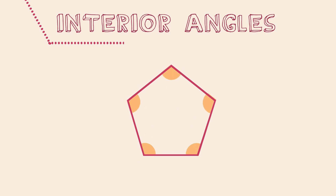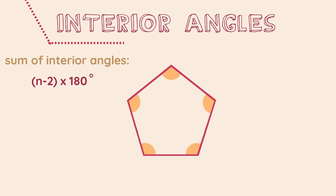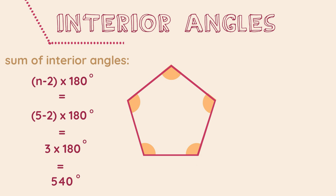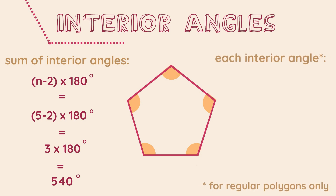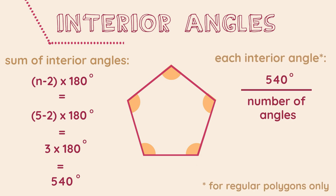Have a look at this example. Using this knowledge, we can also calculate each individual interior angle, as long as the shape is a regular polygon where all angles are equal. We do this by dividing the sum of interior angles by the number of angles or sides of that shape. For example, as this is a five-sided shape, we can divide 540 degrees by 5. Therefore, each angle of a regular pentagon is 108 degrees.